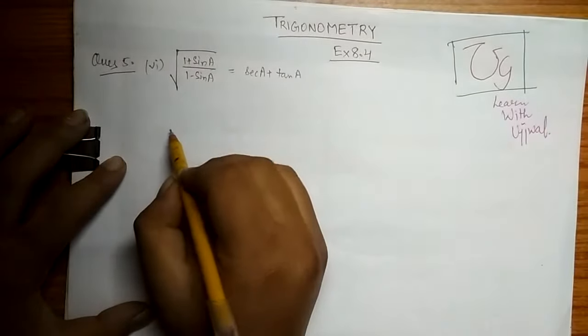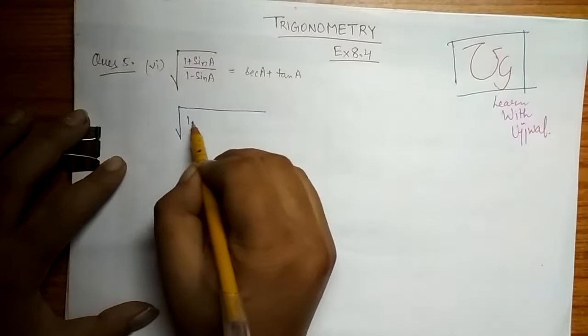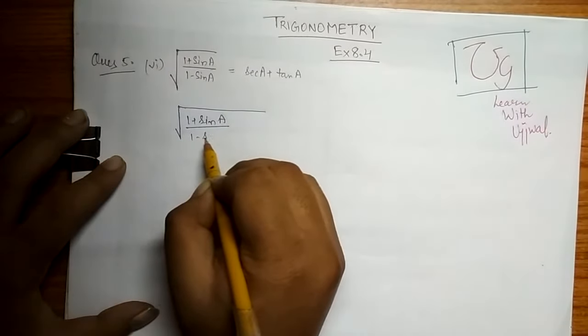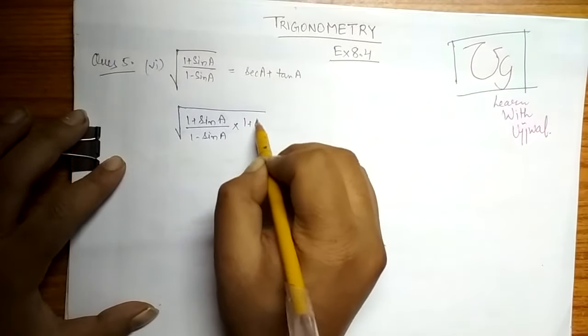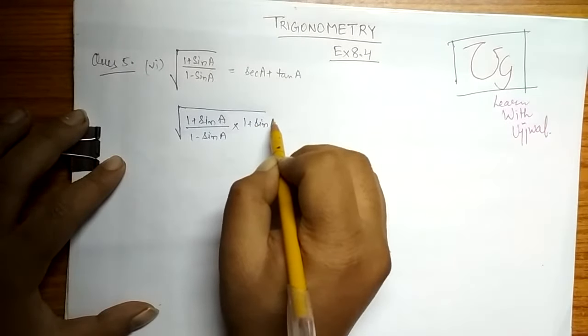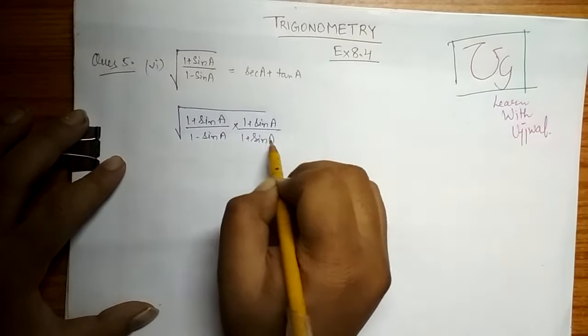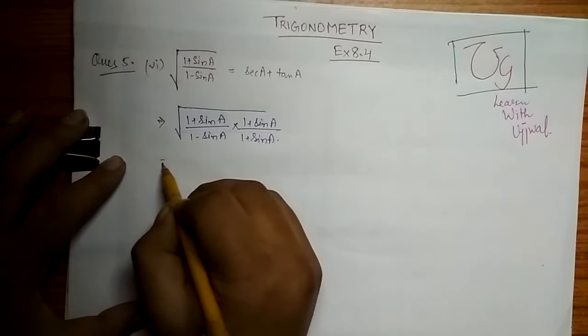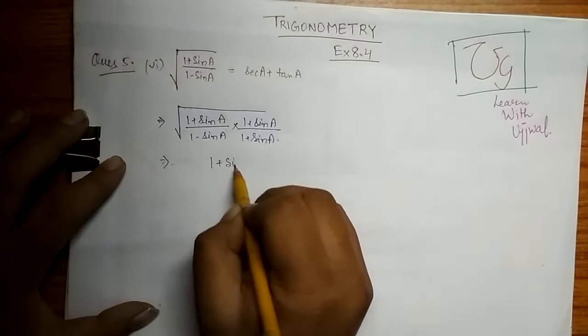What we will do is that (1 + sin a) upon (1 - sin a), let's multiply this with (1 + sin a) upon (1 + sin a). Okay, so now it will become (1 + sin a) whole square...